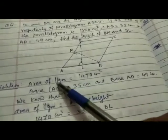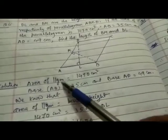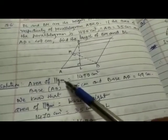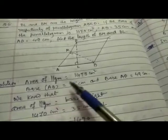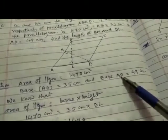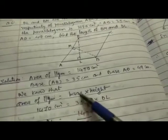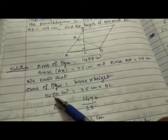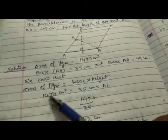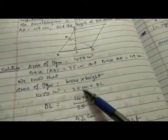Solution: Area of parallelogram is 1470 centimeter square. The corresponding base is 35 centimeter and second base AD is 49 centimeter. We know that area of parallelogram is equal to base into height. So area 1470 centimeter square equals base 35.